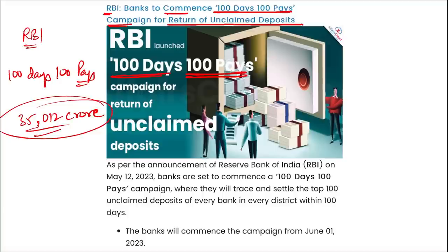RBI has also announced the setting up of a centralized web portal for the public to search unclaimed deposits across multiple banks. The objective of this 100 days, 100 pays campaign is to complement ongoing efforts by RBI to reduce unclaimed deposits in the banking system and return such deposits to their rightful owners.